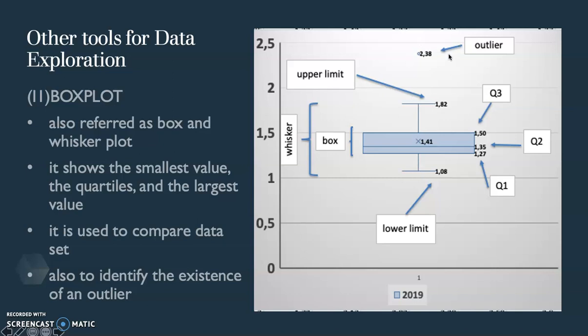If there is an existence of an outlier like we have here, it shows that this outlier is the maximum number. But because it is outside the whisker, then it is said to be an outlier.